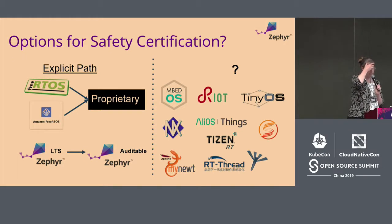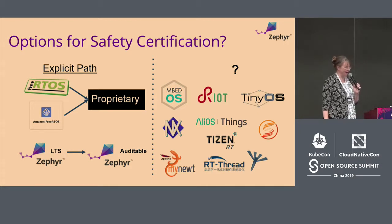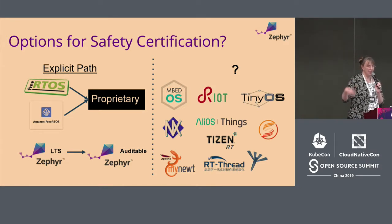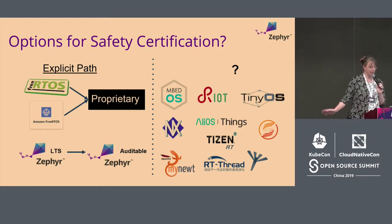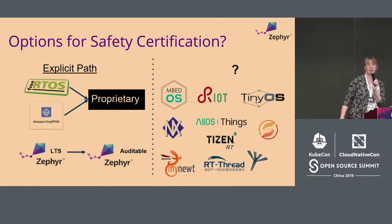Right now if you look for what's publicly available: FreeRTOS has had a path to doing a safety-certified project, and when Amazon acquired FreeRTOS they kept the same path. Zephyr has been publicly visible about taking the LTS and Auditable path. These other RTOSs — I have not seen a safety certification story yet, but that's not to say there isn't one. I'm trying to figure out who else is going after safety certification.